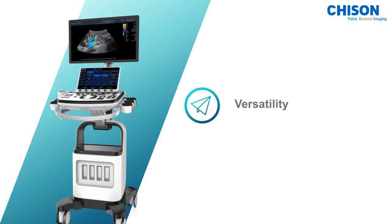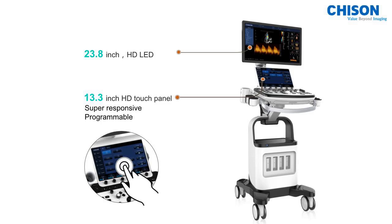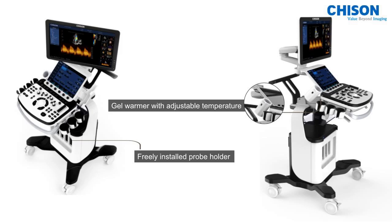Versatility: the XBIT-90 has a wider range of transducers, such as single crystal transducer, high-density transducer, biplane transducer, TE button probe, and more. The machine also features a 23.8-inch HD LED monitor for a large imaging area. The 13.3-inch touch screen is super responsive and programmable, and the machine's position can be adjusted as needed.